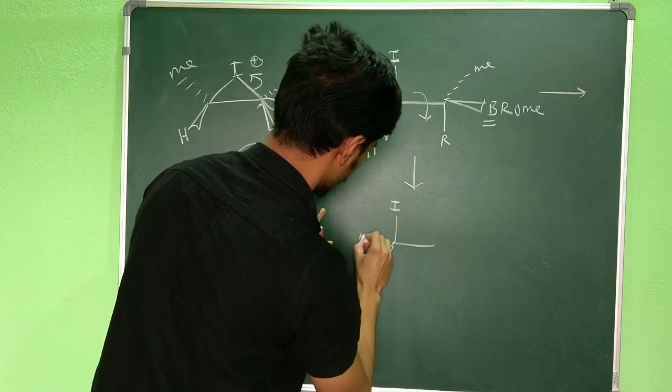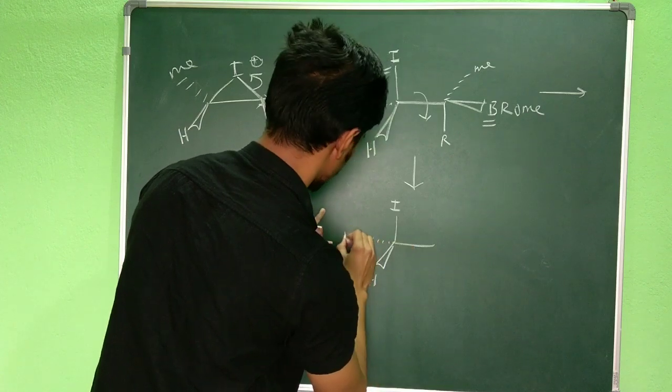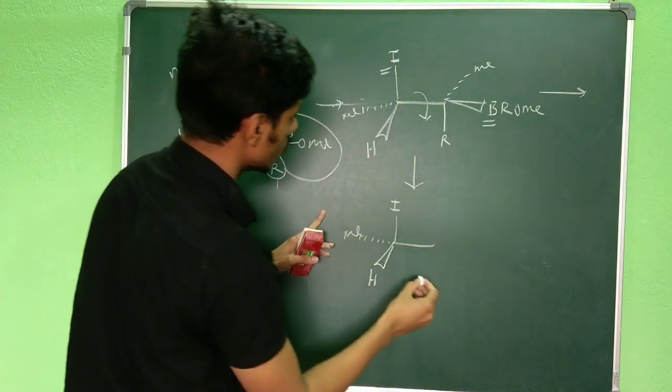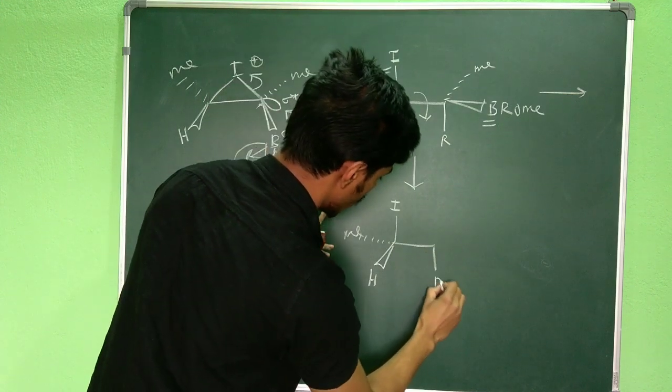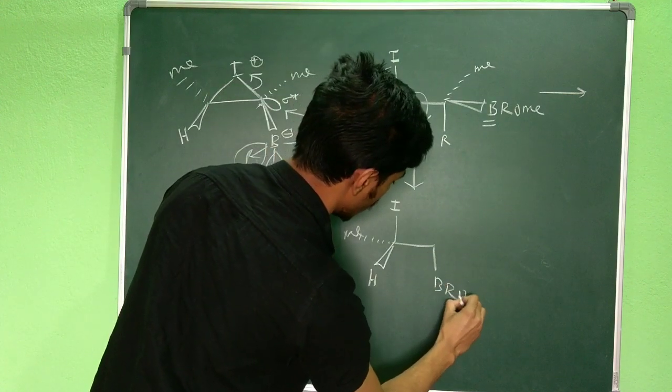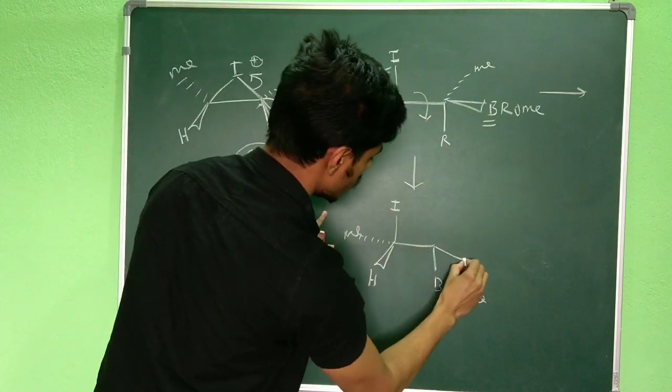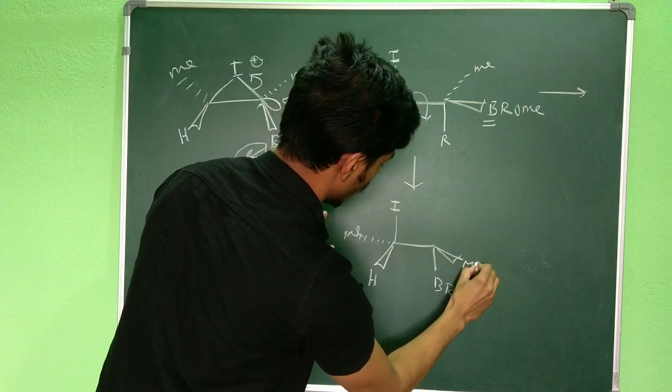By this bond rotation we will get: this side is similar, but this side if it undergoes a bond rotation we will have boron-R-OMe here. We are rotating like this so this methyl group will come forward and this R group will go backward.